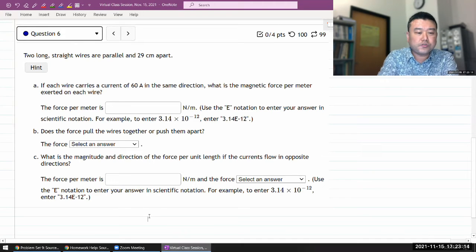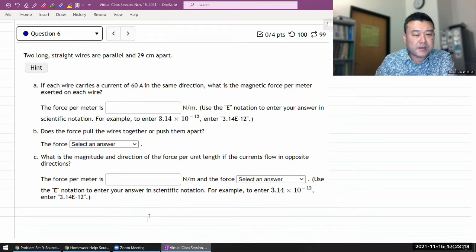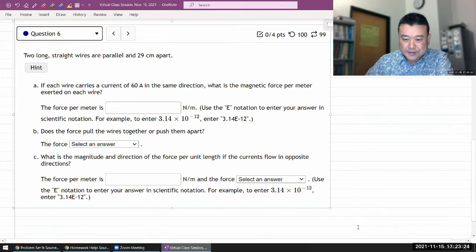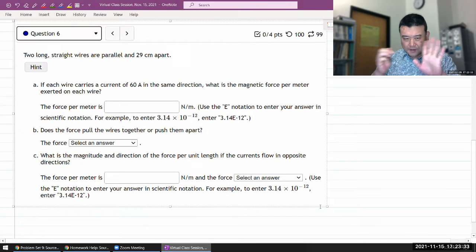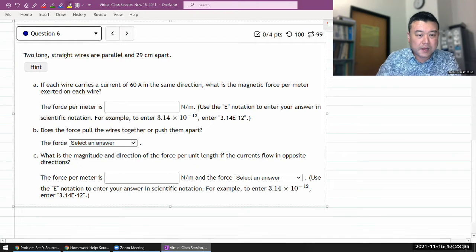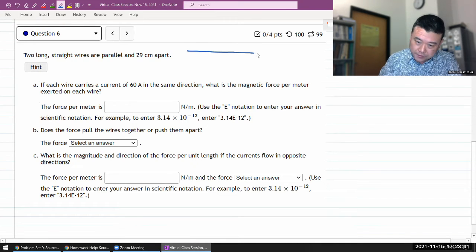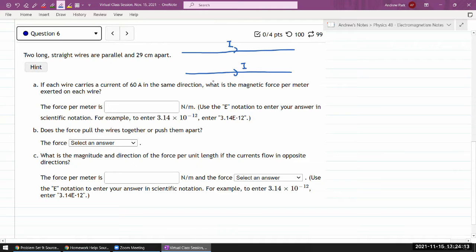It says two long straight wires are parallel and 29 centimeters apart. Let me actually make this a little bit smaller, I need some space to draw things. I have two long straight wires, let me draw them horizontally. So two wires carrying the same current.